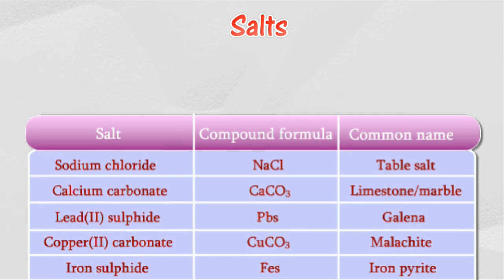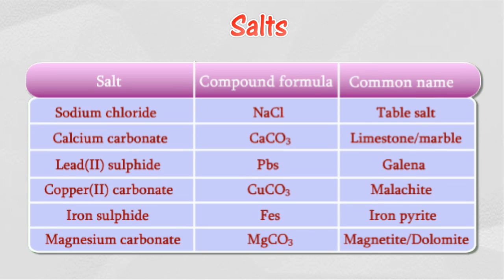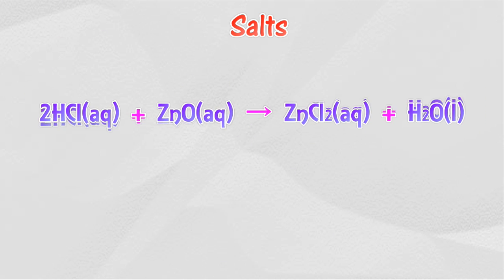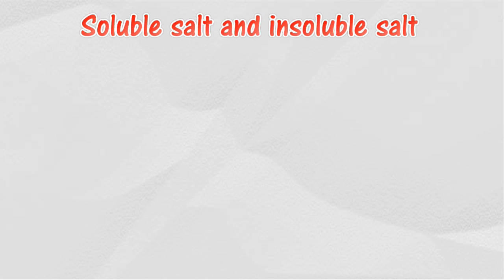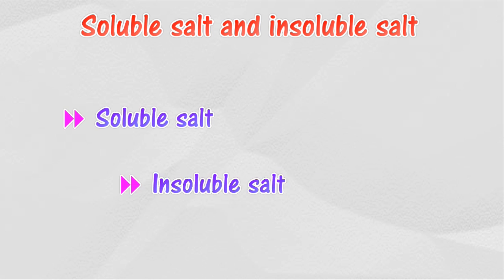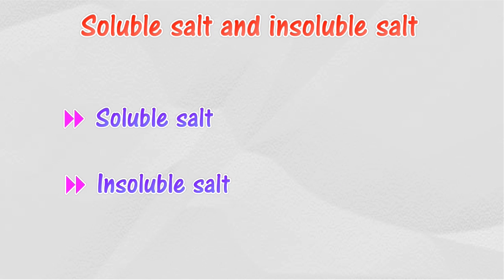The table shows some examples of mineral salts that exist in nature. The reaction between an acid and a base produces salt. Salt can be divided into two categories: soluble salt and insoluble salt.